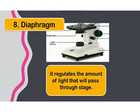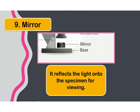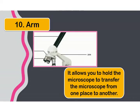Then the diaphragm. The diaphragm regulates the amount of light that will pass through the stage. And then we have the mirror. The mirror reflects the light onto the specimen for viewing.